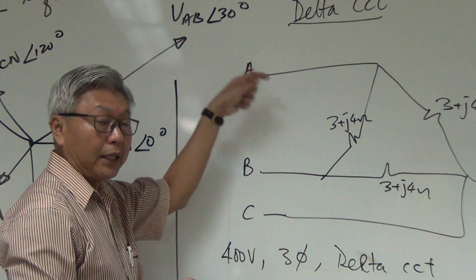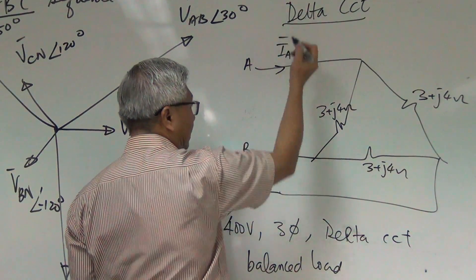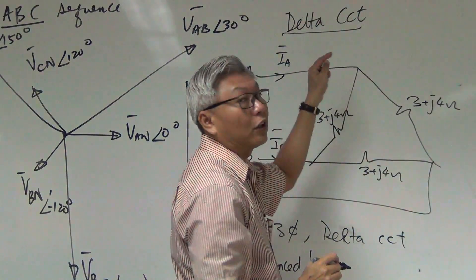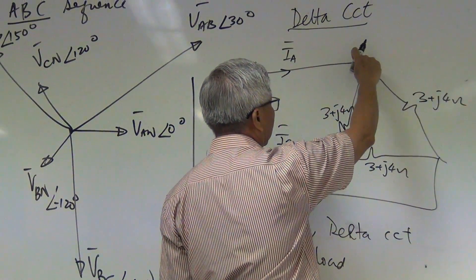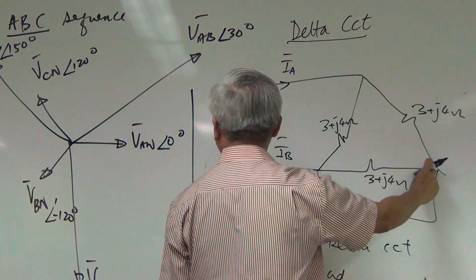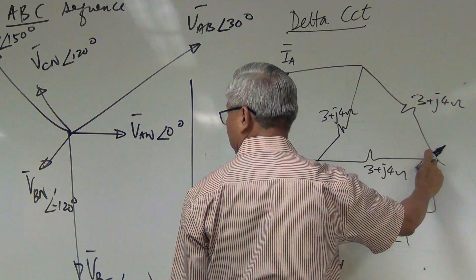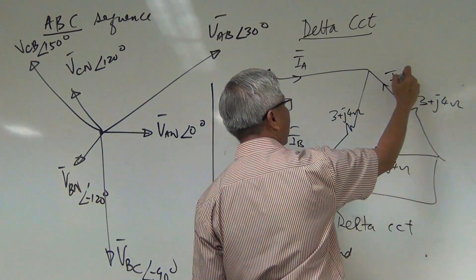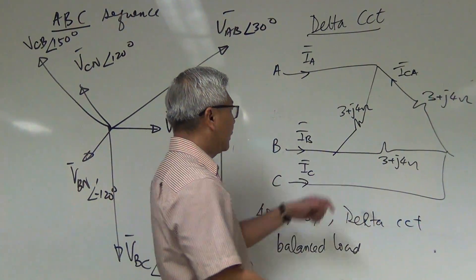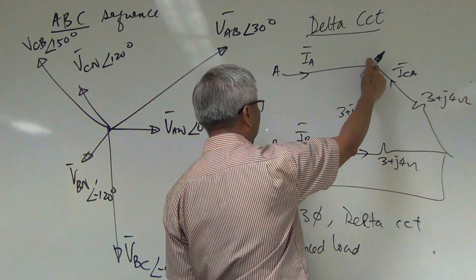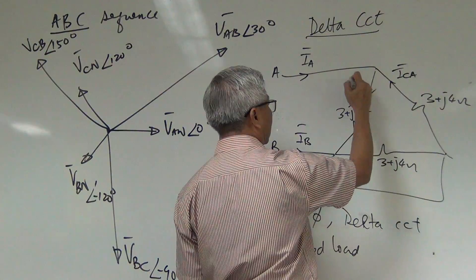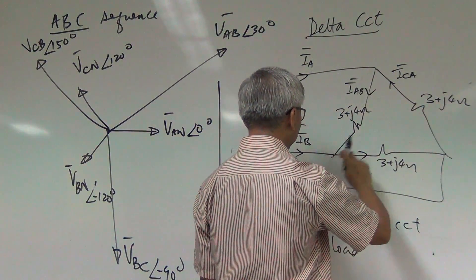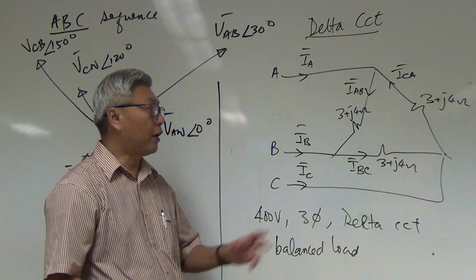The current that flows from line A, line B, line C is called the line current — Ia, Ib, Ic. The current inside the load is called the phase current. So this current here is Ica because it goes from C to A. This current here is Ibc because it goes from B to C. Naming the current correctly is very important because it affects your mathematics.